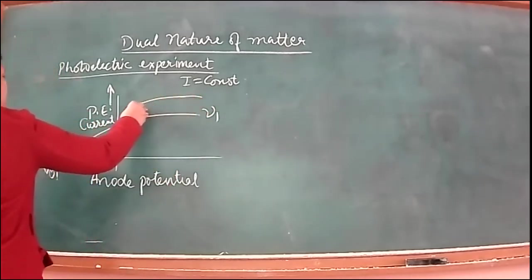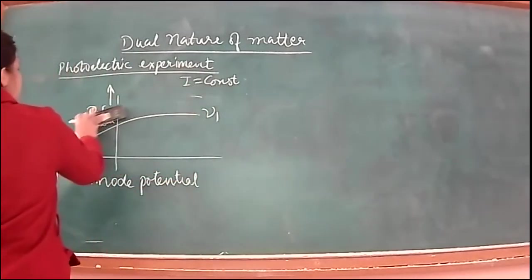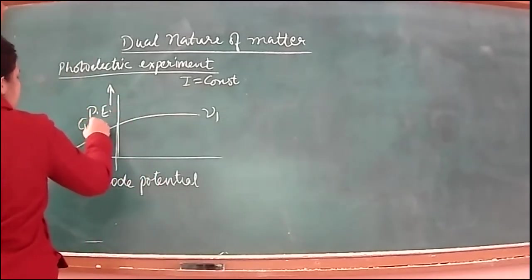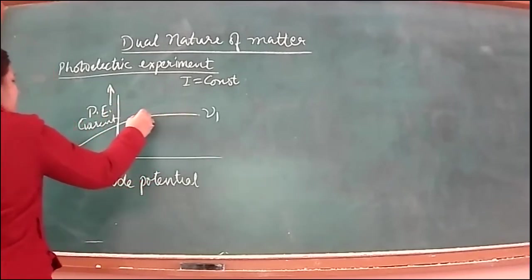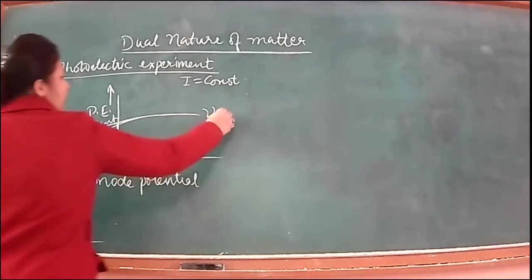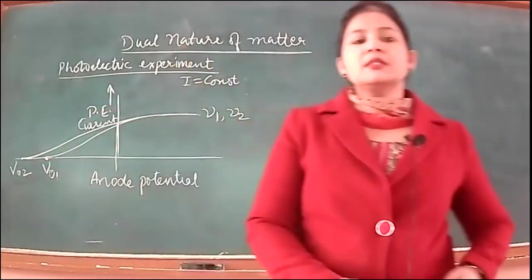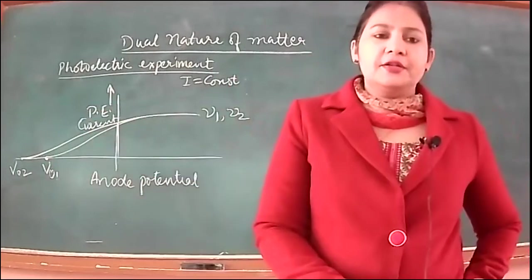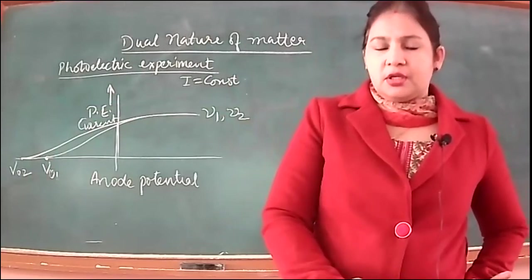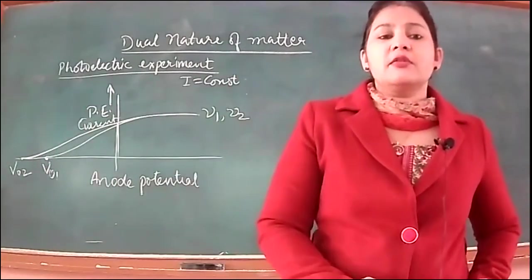For two different frequencies, it was found that photoelectric current remained the same but stopping potentials were different. From this observation we learn that stopping potential depends upon frequency of radiation, but photoelectric current does not depend upon frequency of radiation.